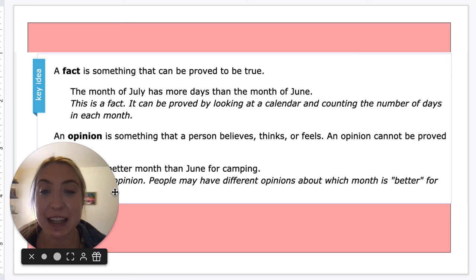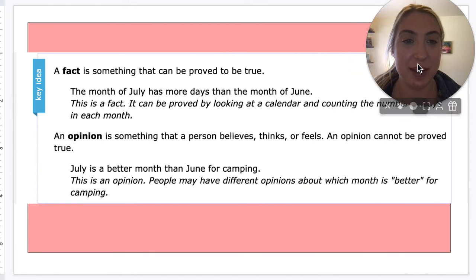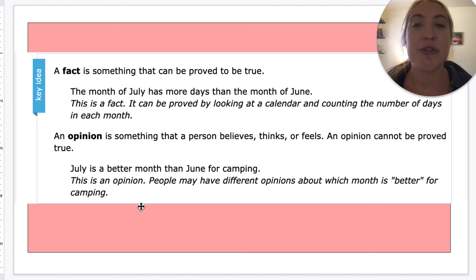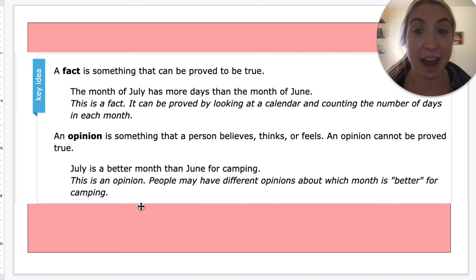A fact is something that can be proved. The month of July has more days than the month of June — that's a fact. It can be proved by looking at a calendar and counting the number of days in each month.